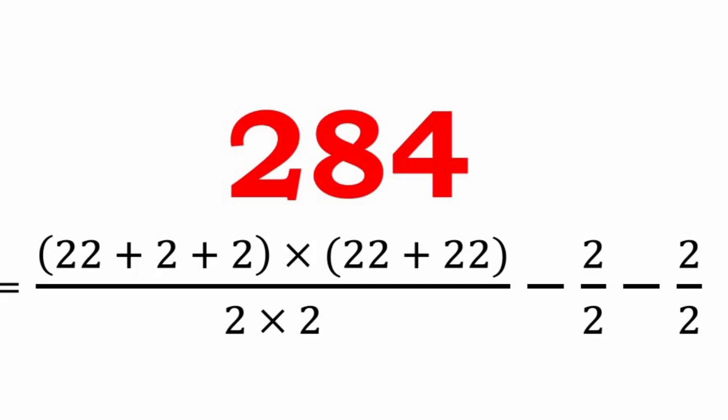The single-digit representation using 2 is: (2 plus 2 plus 2 plus 2 plus 2 into 22 plus 22) whole divided by (2 into 2 minus 2/2 minus 2/2). The digit used here is 2 only.